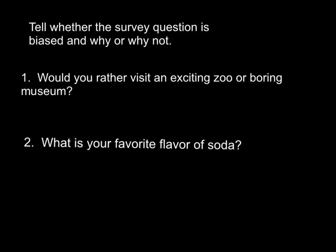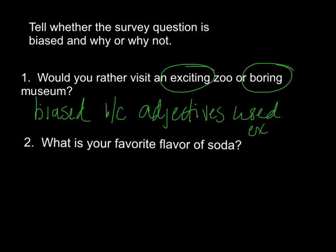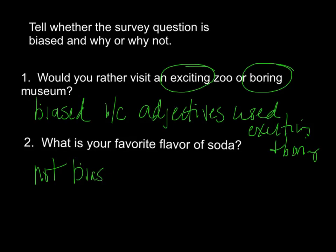This is a biased question because of the words 'exciting' and 'boring.' When you ask a survey question, it should not be biased. It should be straightforward and not steer the person in either direction. This is biased because of the adjectives — exciting and boring. Now, 'What is your favorite flavor of soda?' is a good question. This is not biased because it doesn't steer you one way or the other. It's not saying 'What is your favorite flavor of delicious soda?' So it's not biased.